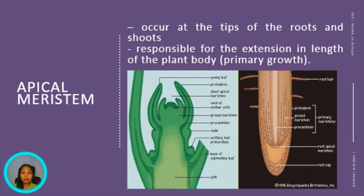The apical meristem occurs at the tip of the roots and shoots. It is responsible for the extension in length of the plant's body, which is referred to as primary growth. The shoot apical meristem plays a role in organogenesis, which is the formation of new leaves and auxiliary buds in specific spatial patterns. In contrast, the root apical meristem is not involved in organogenesis.